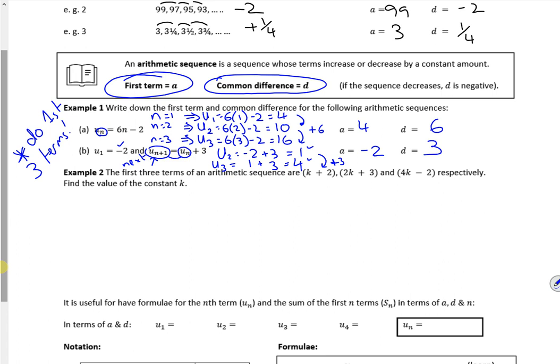Right, so let's look at the second example. The first three terms of an arithmetic sequence are K plus 2, 2K plus 3, and 4K minus 2. Find the value of K. So I know if I start off with K plus 2, if I add D onto it, I get 2K plus 3. And I know if I start off with 2K plus 3, if I add D onto it, it gives me the next term. So I can make some little expressions for them. So I've got K plus 2 plus D is 2K plus 3. And then I've also got 2K plus 3 plus D is 4K minus 2. So if I rearrange these for D, I can put them equal to each other and solve it.